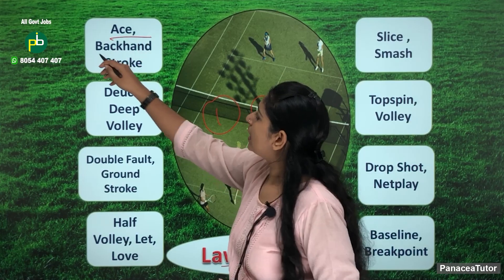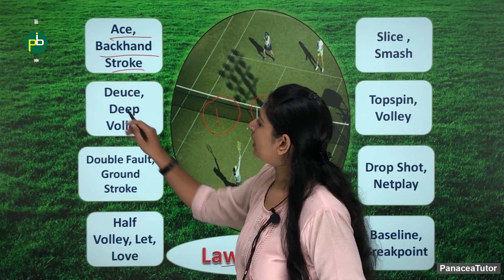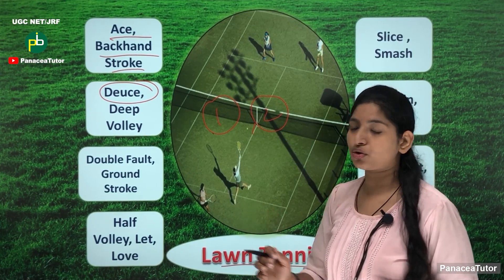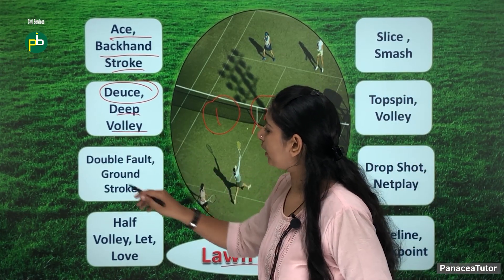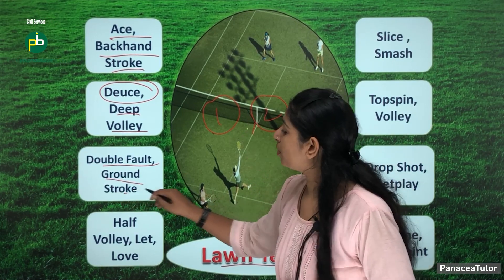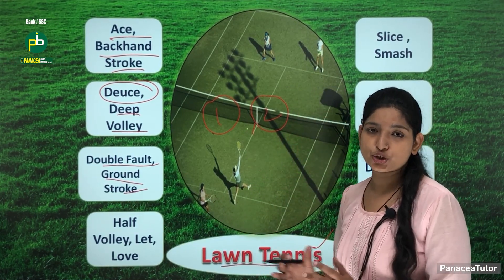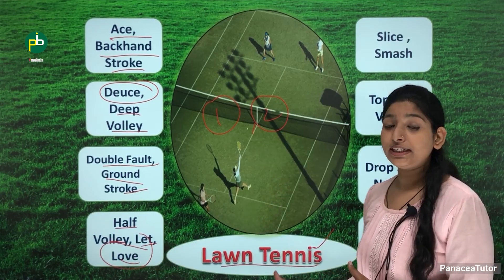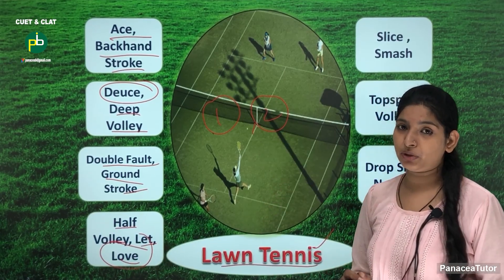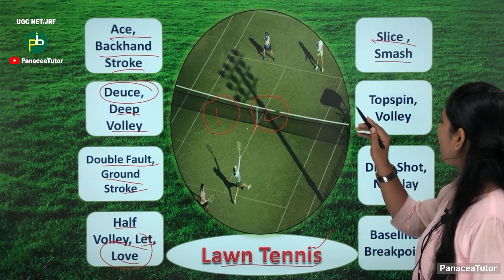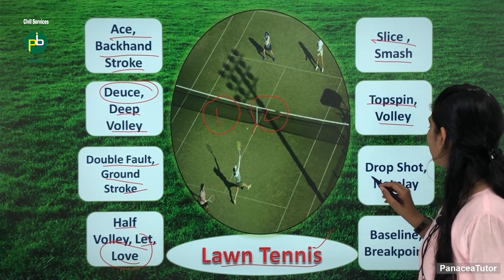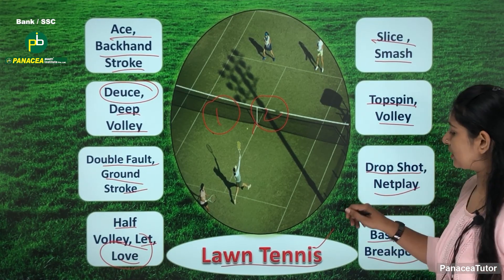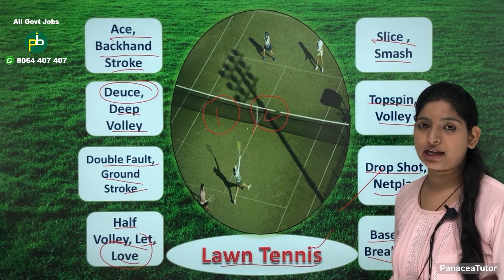First is ace, then backhand stroke, twist, and the position where both team members have the same score — tie score. Next is deep volley, double fault, ground stroke — when you hit the shuttlecock and it directly touches the ground. Half volley, love, slice, smash, top spin, volley, drop shot, net play, baseline, and break point — these are all important terms related to lawn tennis.